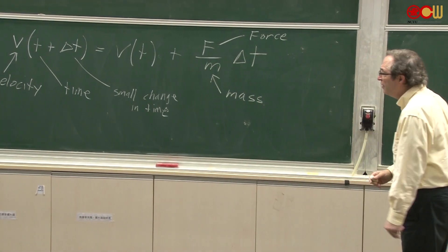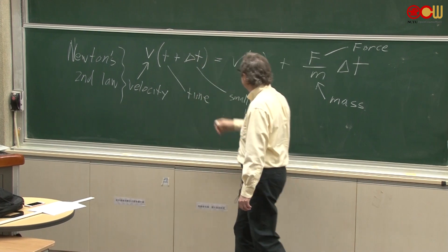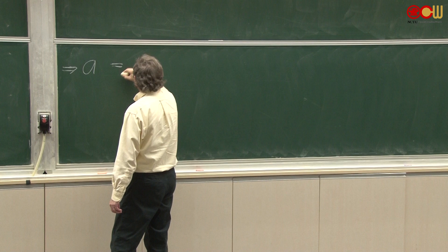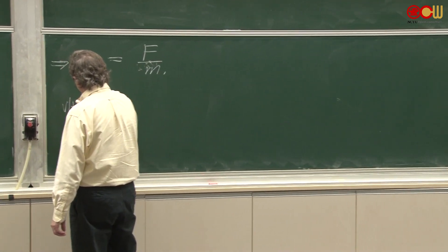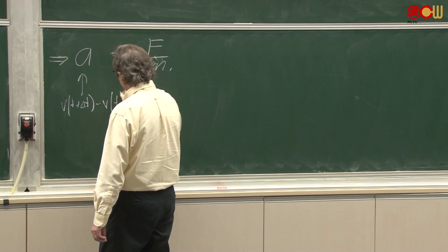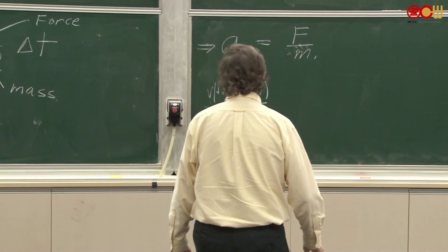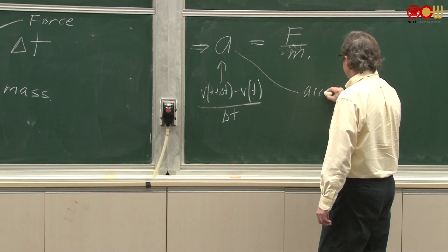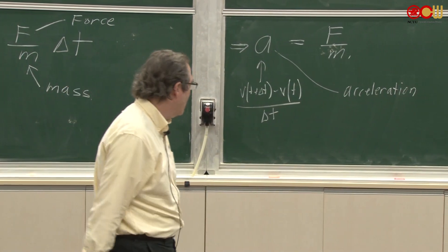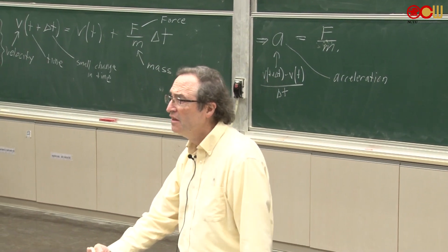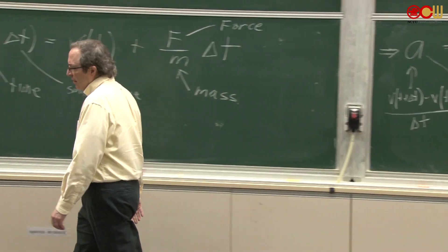If we let delta t be smaller and smaller, then if I divide through by delta t and move v of t over, I can get something you might recognize more. The acceleration equals F over m. This is basically v of t plus delta t minus v of t, all divided by delta t — and then you take a limit, like you may be learning about in calculus. This is called the acceleration: the change in velocity divided by the change in time. So what forces do is cause acceleration directly. They do not cause velocity directly.